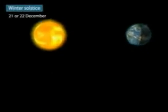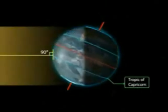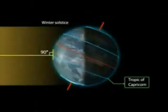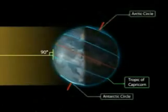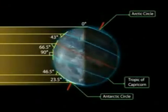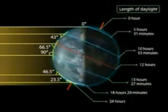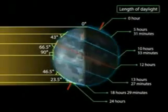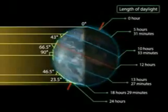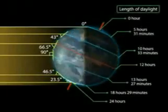Winter Solstice: on the 21st or 22nd of December, the overhead Sun is over the Tropic of Capricorn. It receives the largest amount of solar radiation. On this day, the Northern Hemisphere is in the Winter Solstice, while the Southern Hemisphere is in the Summer Solstice. The angle of the Sun decreases towards the poles. On this day, the length of daytime in the Northern Hemisphere is the shortest in the year. There are 24 hours of darkness at the Arctic Circle and 24 hours of daylight at the Antarctic Circle.